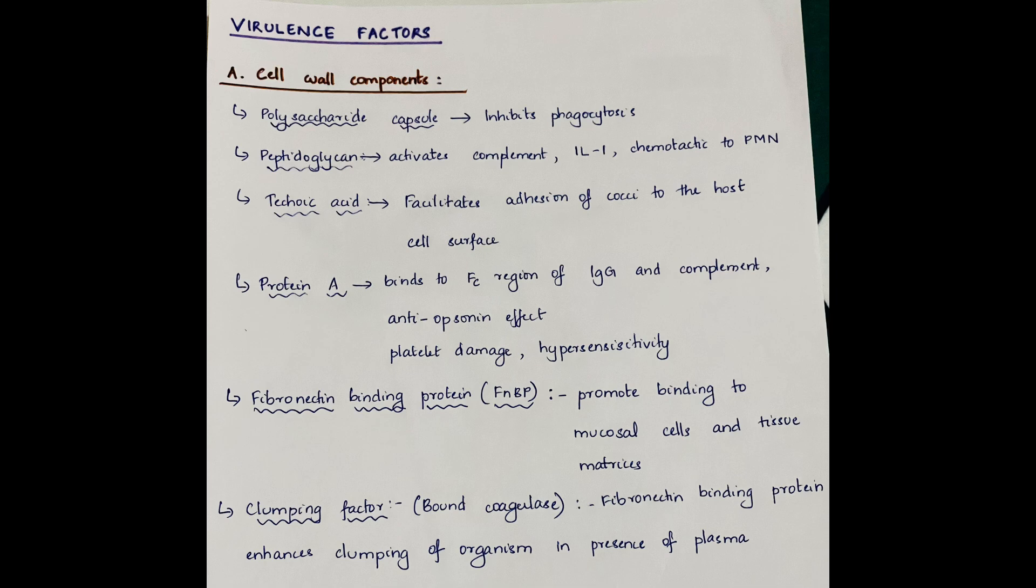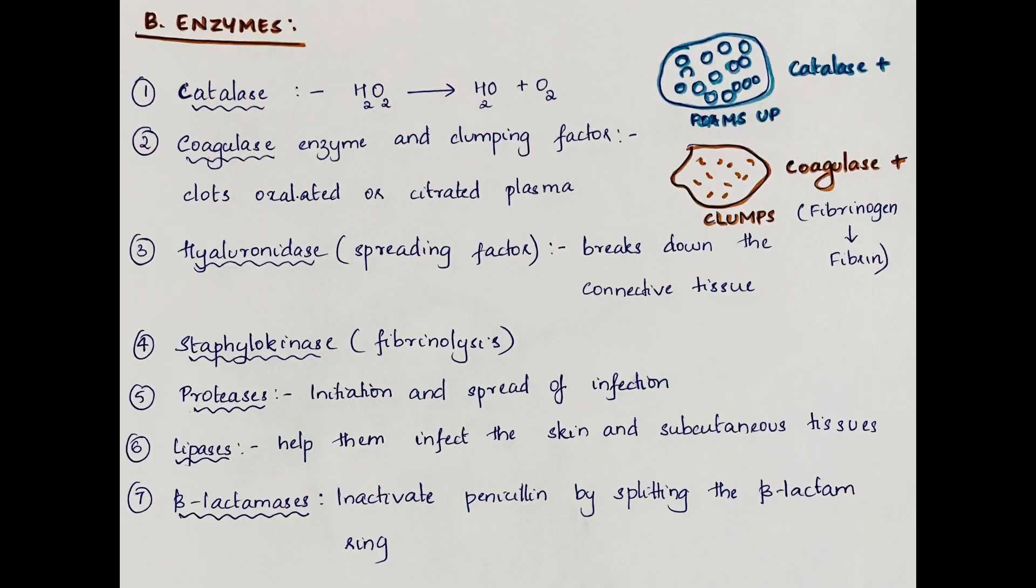Enzymes include catalase enzyme which converts hydrogen peroxide into water and oxygen. Coagulase enzyme and clumping factor are enzyme-like proteins that clot oxalated or citrated plasma, converting fibrinogen into fibrin. Hyaluronidase is a spreading factor that breaks down connective tissue. Staphylokinase is involved in fibrinolysis. Proteases help in initiation and spread of infection. Lipases help them infect the skin and subcutaneous tissue. Beta-lactamases inactivate penicillin by splitting the beta-lactam ring.